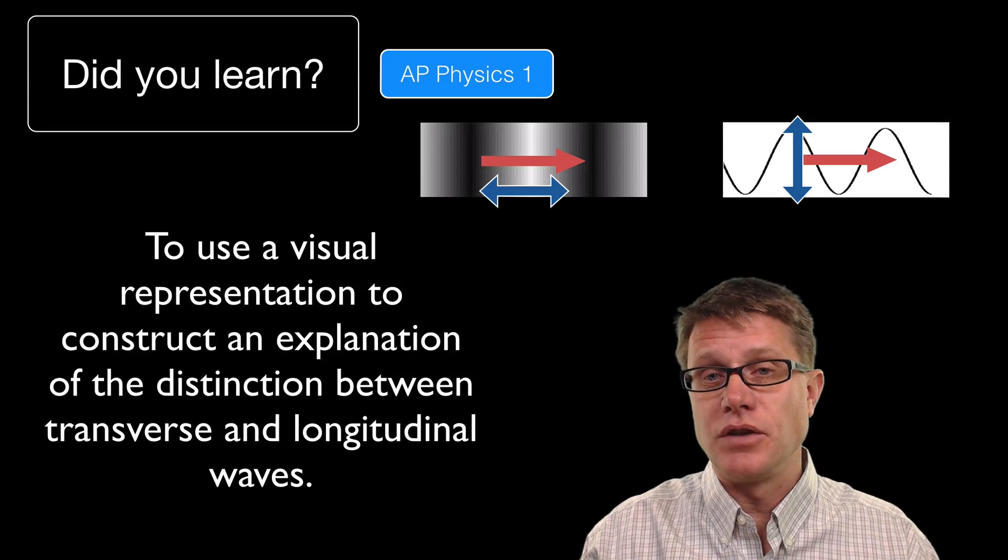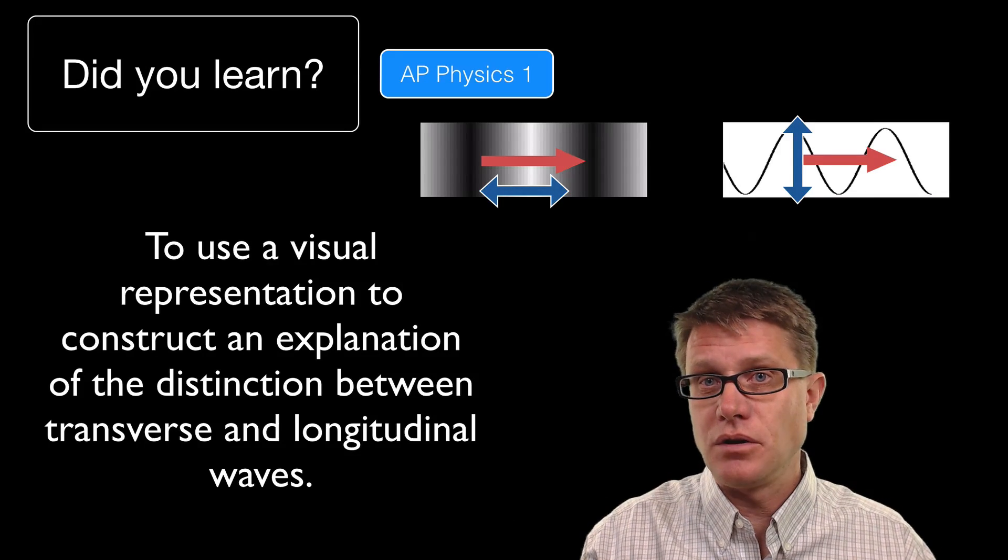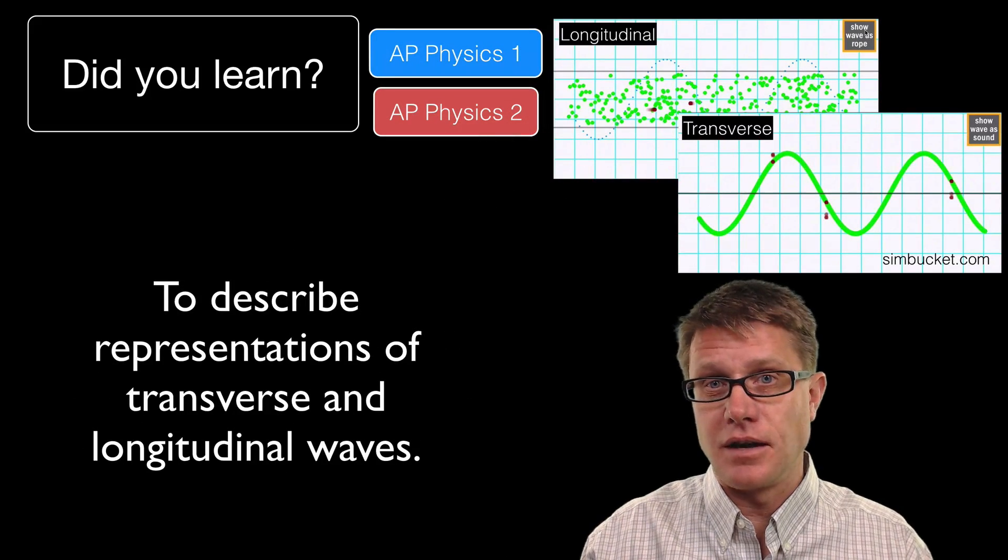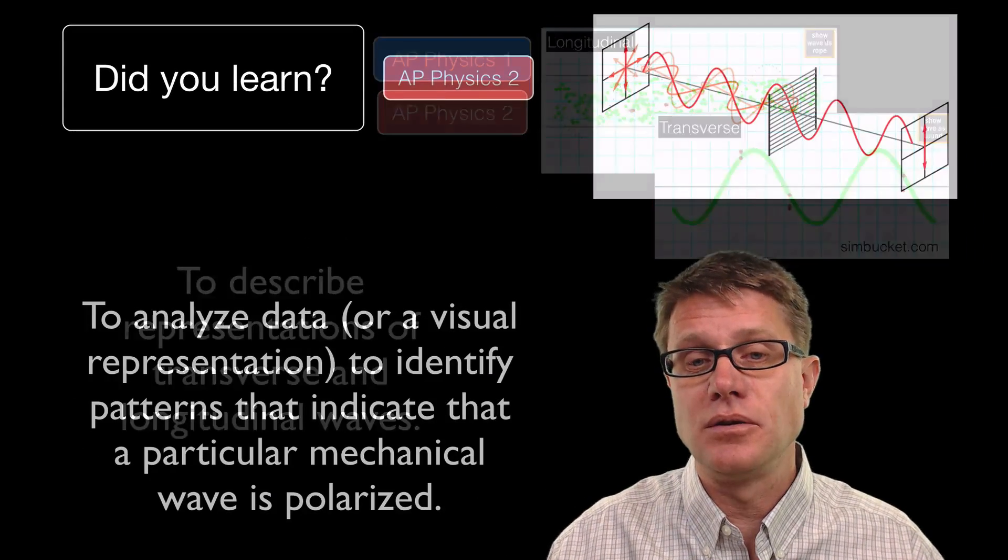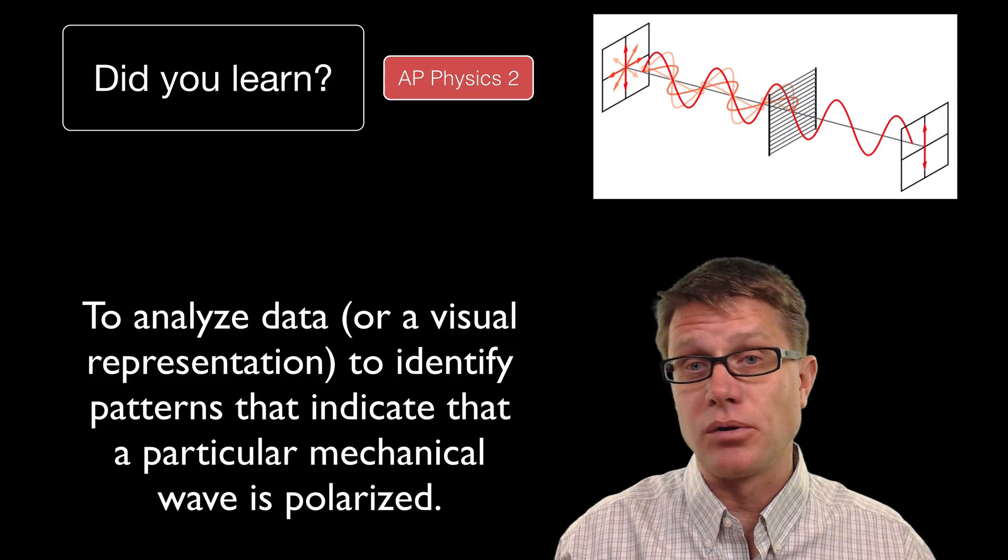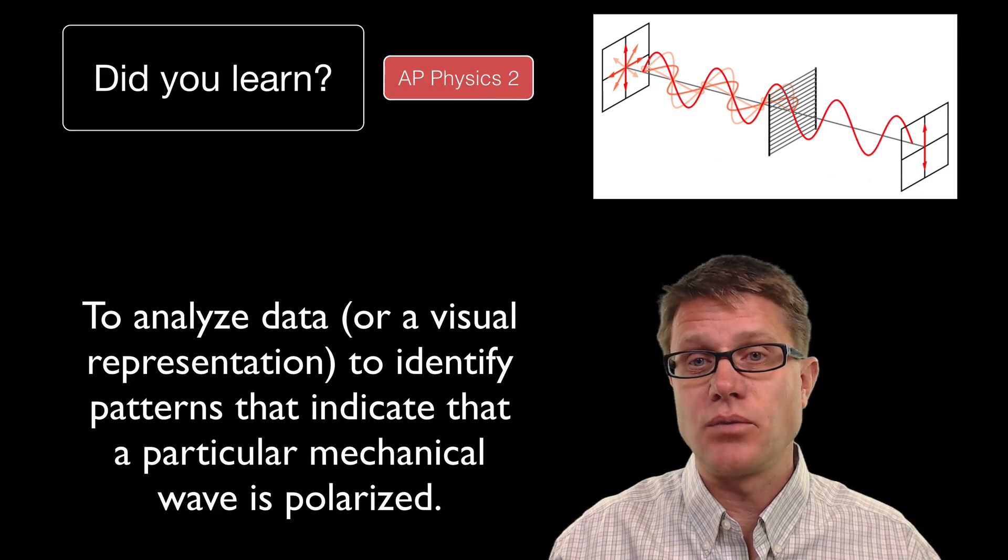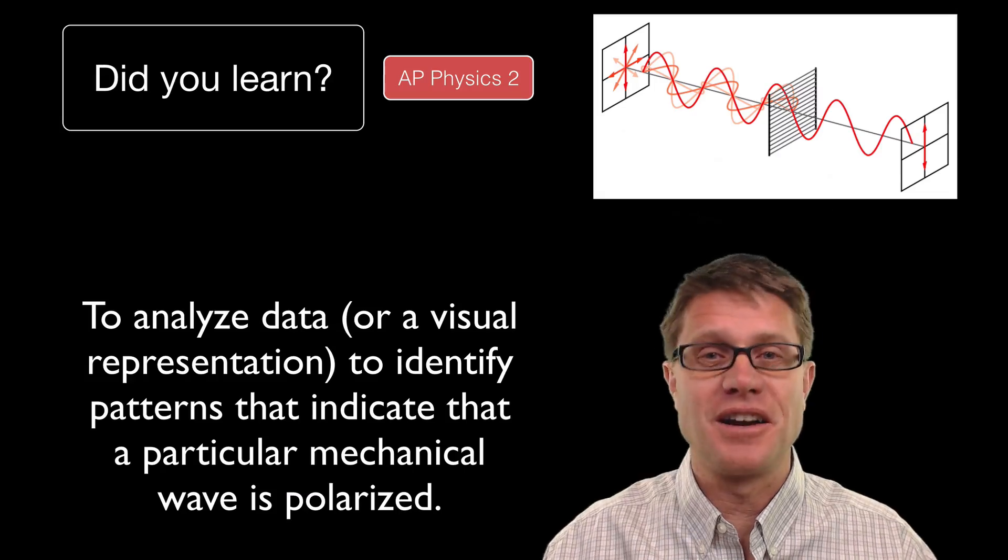And so did you learn to use visual representations of longitudinal and transverse waves? Have you learned how to use a model to study them? And then in AP Physics 2 do you understand the importance of polarizing as a way to limit only a certain direction of transverse waves moving through? I hope so. And I hope that was helpful.